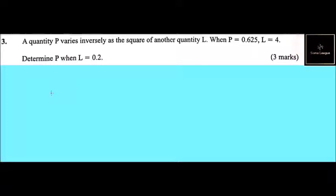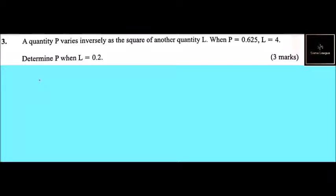Question number three: we are given a quantity p varies inversely as the square of another quantity l. When p is 0.625, l is equals to 4. Determine p when l is 0.2.